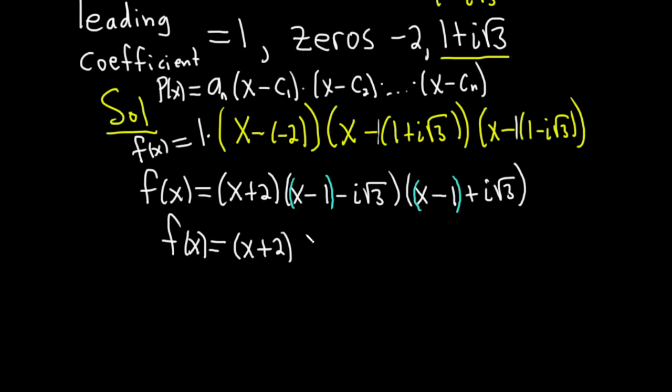And so now what we're going to do is we're going to invoke a very powerful formula. It says if you have a minus bi times a plus bi, that's equal to a squared plus b squared.